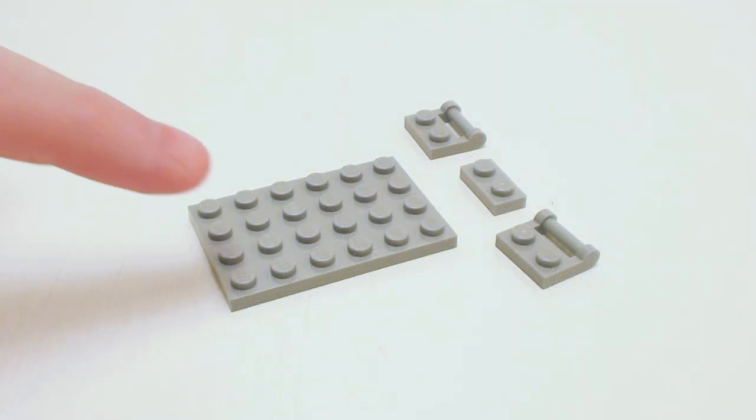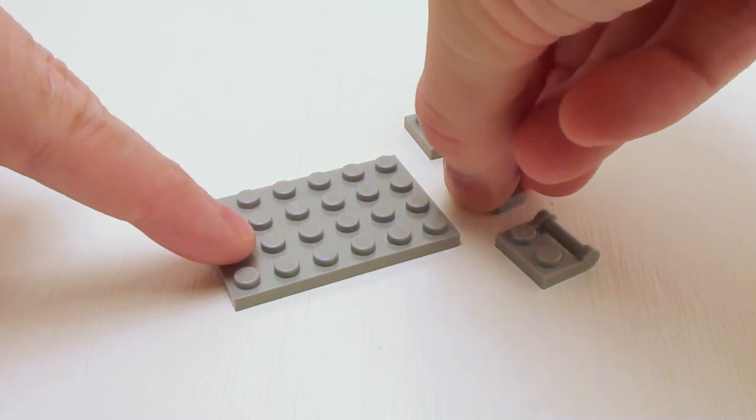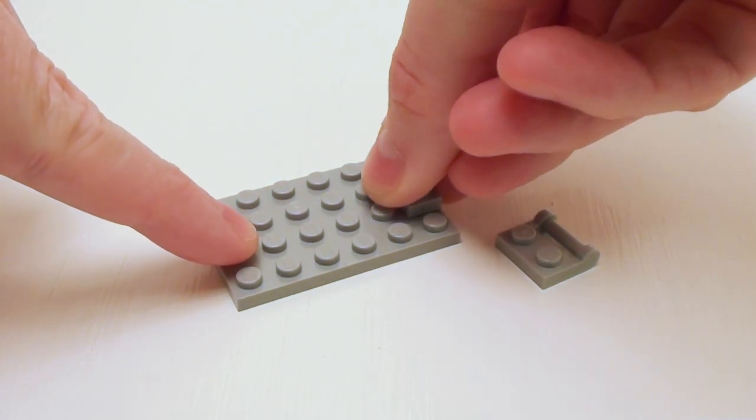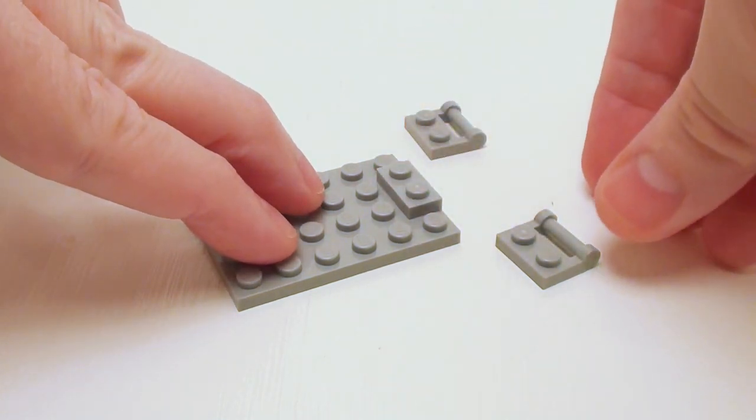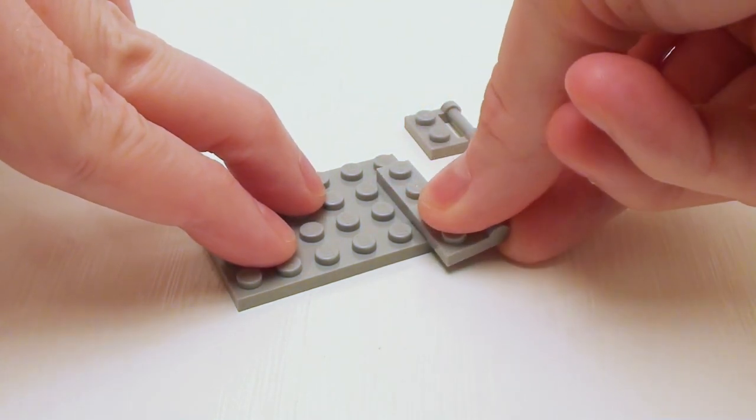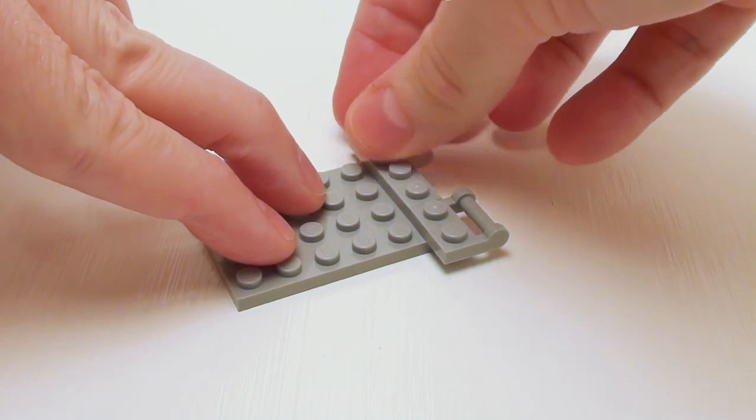Let's start with a 4 by 6 plate for the base. Set down a 1 by 2 plate on the right-hand side, followed by a pair of 1 by 2 plates with stick.